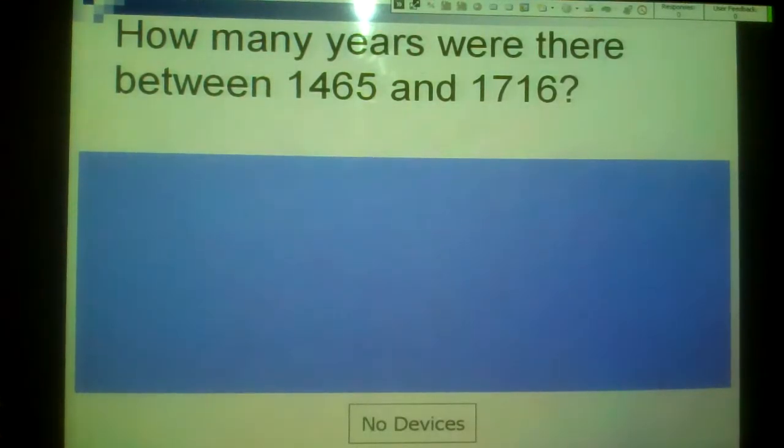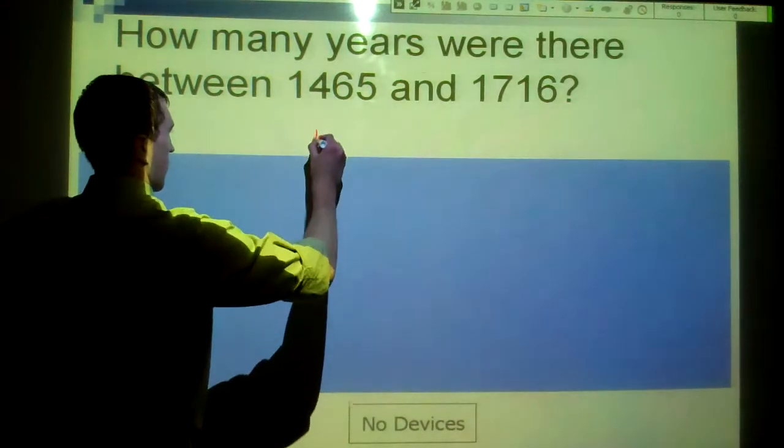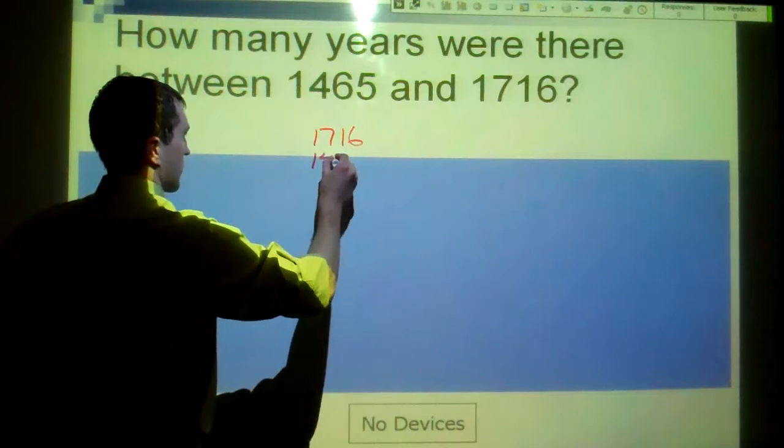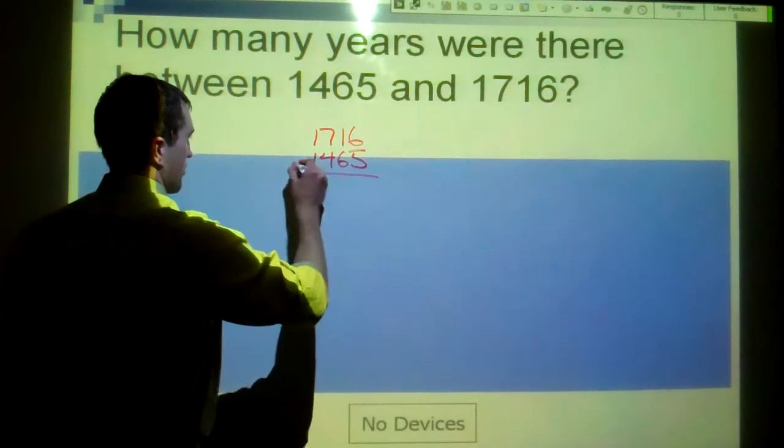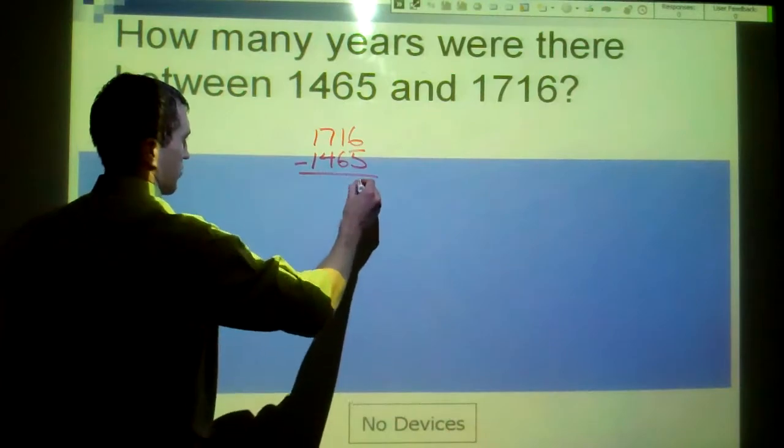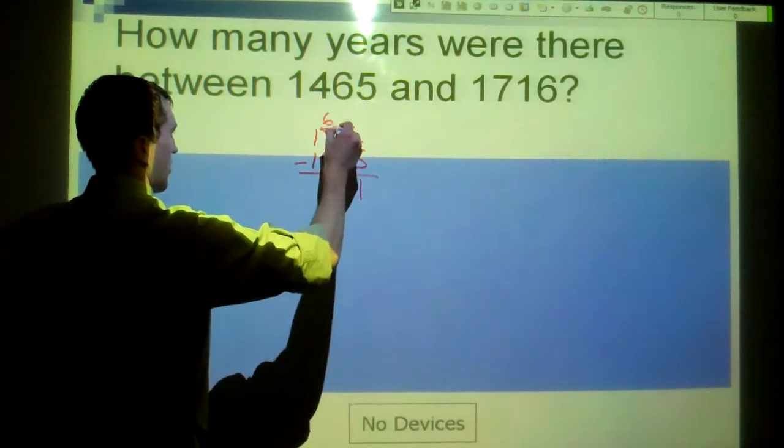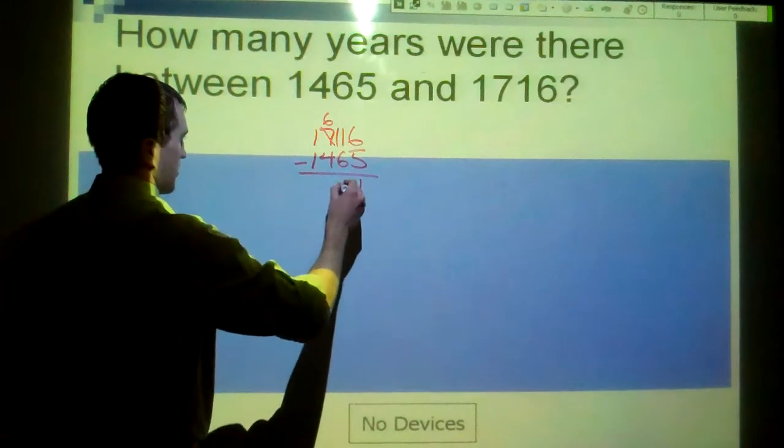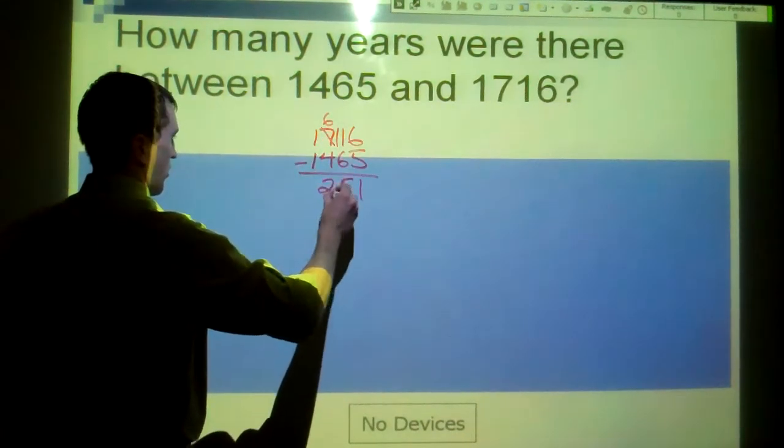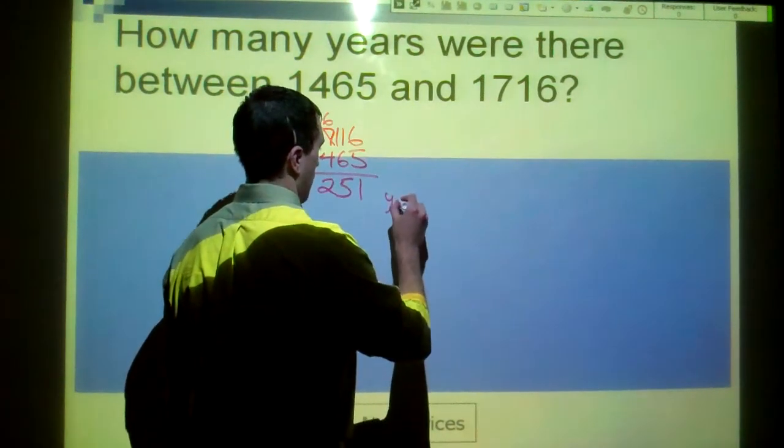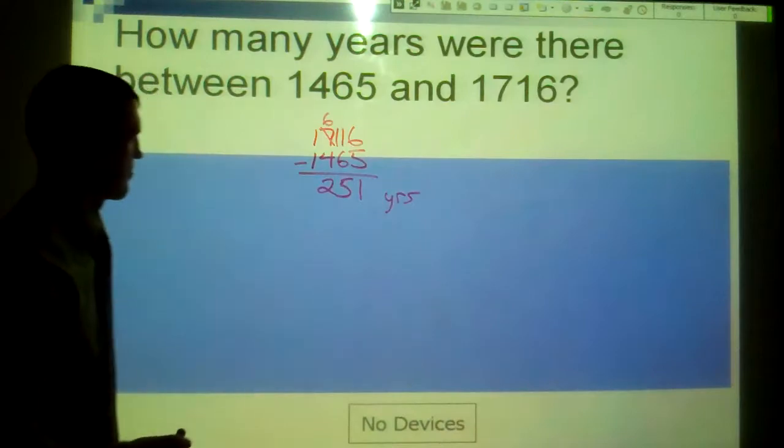Let's use that here. How many years were there between 1465 and 1716? Well, 1716 is our later date. Here's our earlier date, 1465. Subtract those. 6 minus 5 is 1. 1 minus 6, we have to borrow from 7 here. 11 minus 6 is 5. 6 minus 4 is 2. So 251 years.